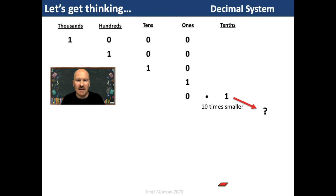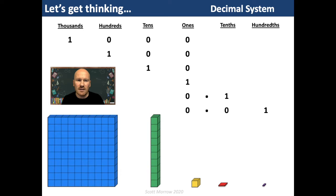What would be ten times smaller than a tenth? If we split a tenth into ten equal parts, we create hundredths, because it would take one hundred of them to make up one whole. One of those hundredths we can write in digits as 0.01, because we have no ones, no tenths, and one hundredth. That decimal point is fixed — it doesn't move and it's always been there. We just don't need it when we're working with whole numbers. But each of these numbers could be written with a decimal point: one as 1.0, ten as 10.0, one hundred as 100.0, one thousand as 1000.0. When we've got no fraction, we don't need to write that decimal point.